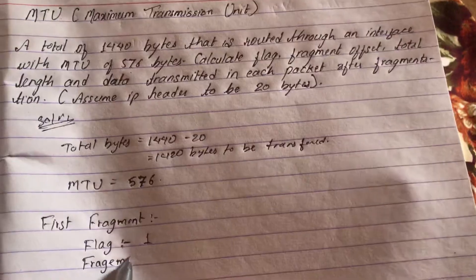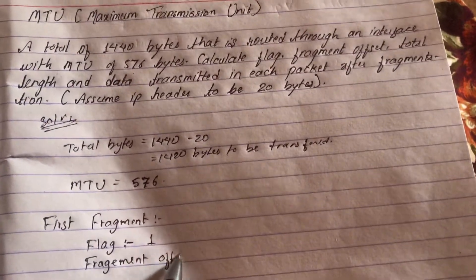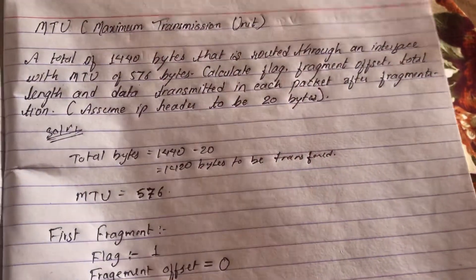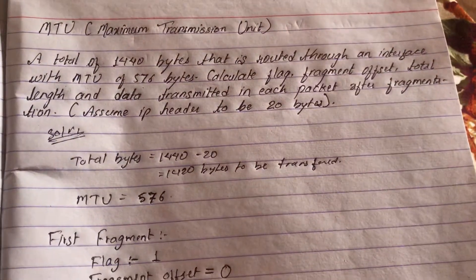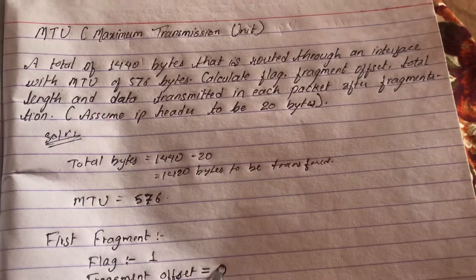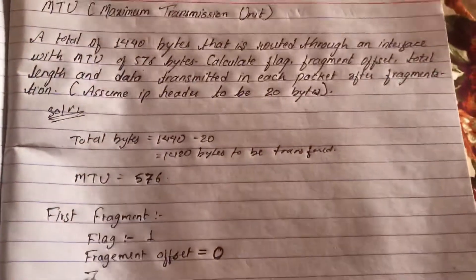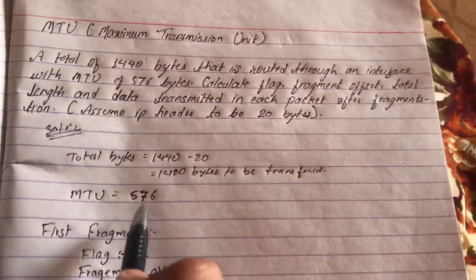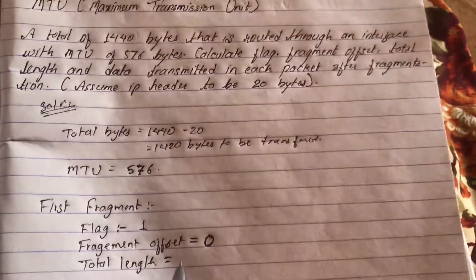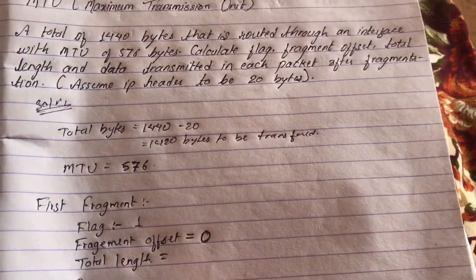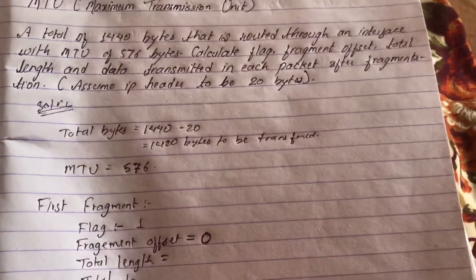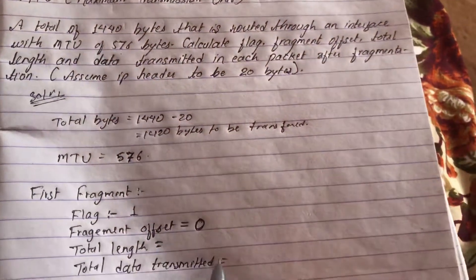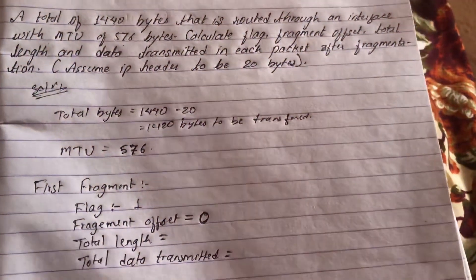The fragment offset of the first fragment is always 0, because there is no prior fragment before it. The total length and total data transmitted for the first fragment are values we'll calculate once we work through the second fragment.